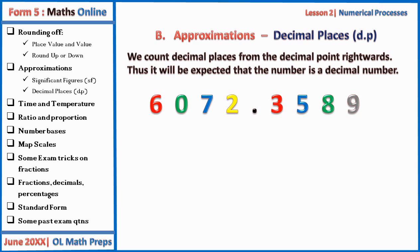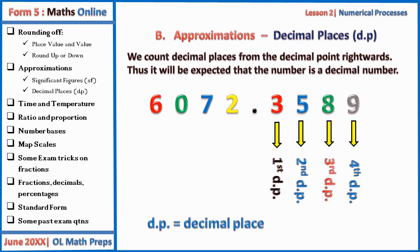Now we look at decimal places. We count decimal places from the decimal point rightward. This means the number is expected to be a decimal number. The first decimal place is the first digit that occurs after the decimal marker. Note that 'dp' is an acronym for decimal place.